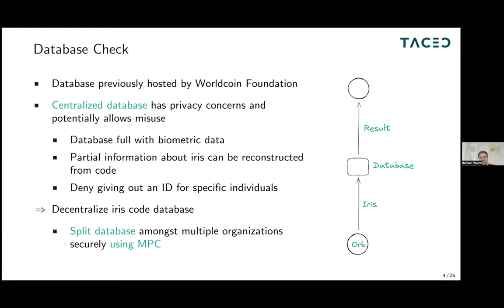Unfortunately, this required WorldCoin to store all biometric information in a database, which has huge privacy implications. It's a database of biometric information, which is not well-seen by privacy regulators. It also allows for potential misuse — for example, deriving information about humans from iris codes, like what color the iris was, or using the database to sign up for different services that also use iris codes. Furthermore, if you control this single server, you can deny giving out IDs to some individuals — so censorship is also a problem.